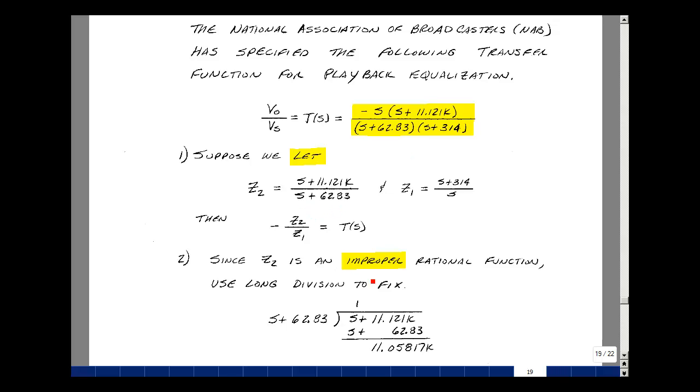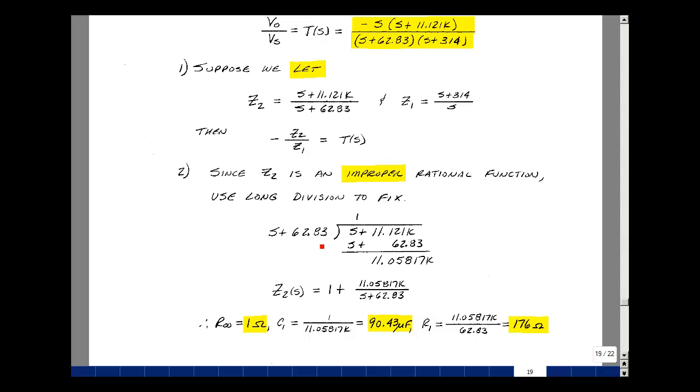The impedance Z2 is an improper rational function. Let's do long division and get it into proper rational function form. S plus 62.83 divided into S plus 11.121 would go once. Subtracting, I get 11.05817K. You could write Z2 as 1 plus the remainder divided by (S plus 62.83). This would be R infinity of one ohm, and then a parallel R and C. The C is the reciprocal of the residue, 90.43 microfarads. The resistor is 176 ohms.